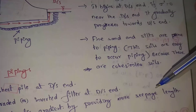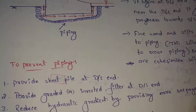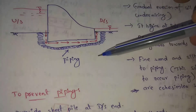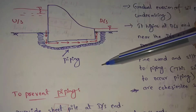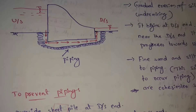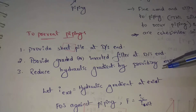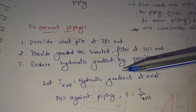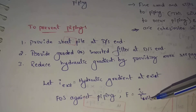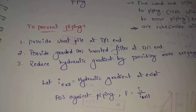Next, reduce hydraulic gradient by providing more seepage length. If we provide this seepage length, we provide maximum control over piping. Let i_exit equal the hydraulic gradient at exit. FOS — factor of safety against piping — equals ic divided by i_exit, where ic means critical hydraulic gradient and i_exit means hydraulic gradient at exit.